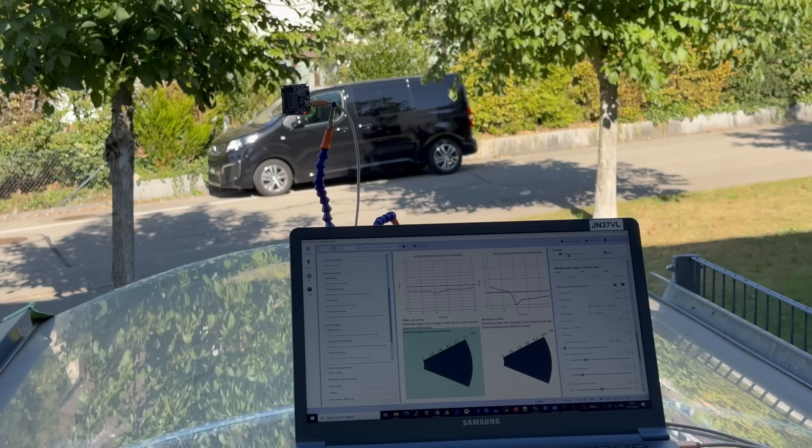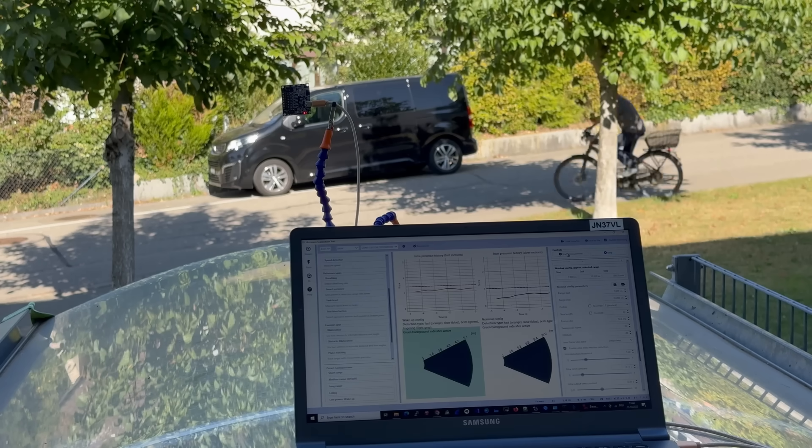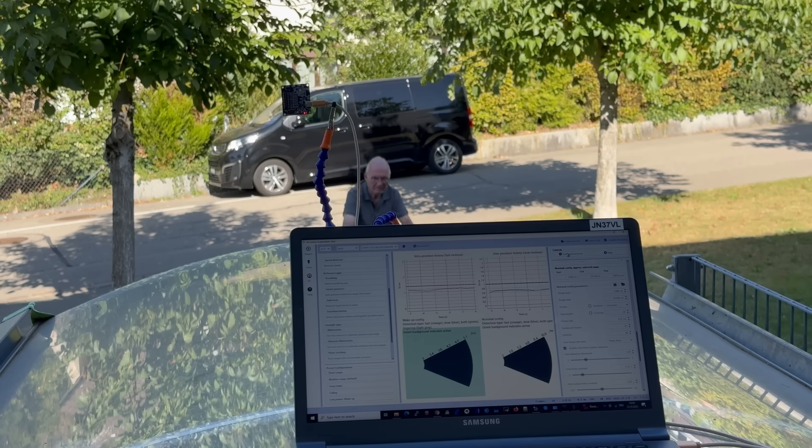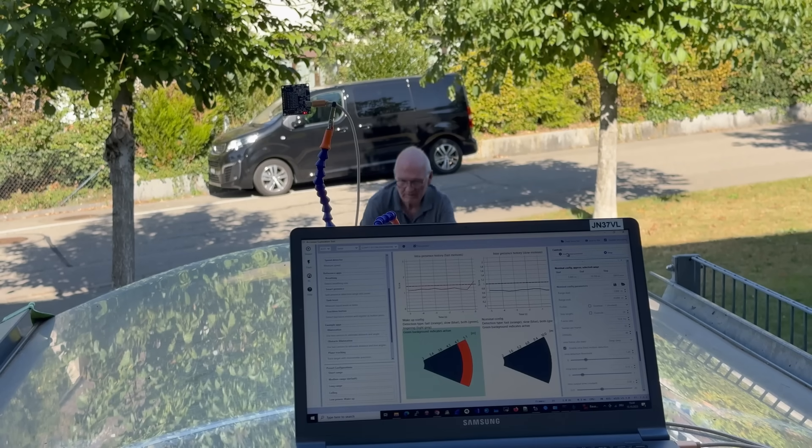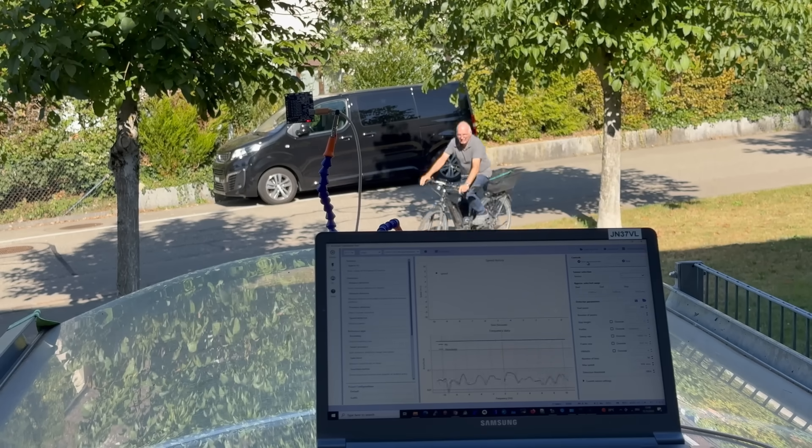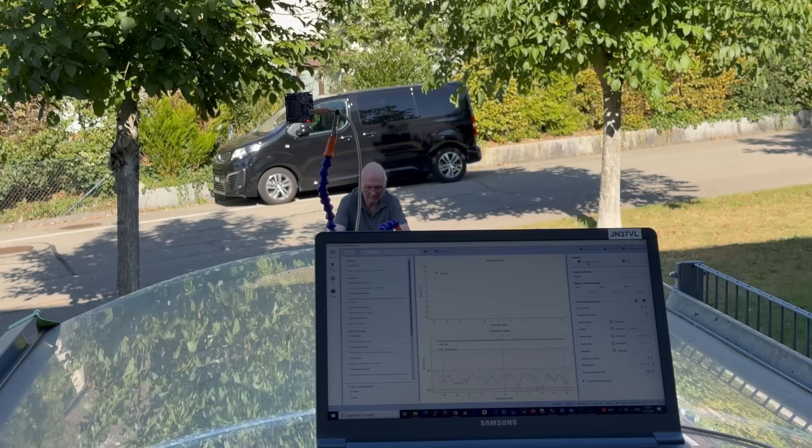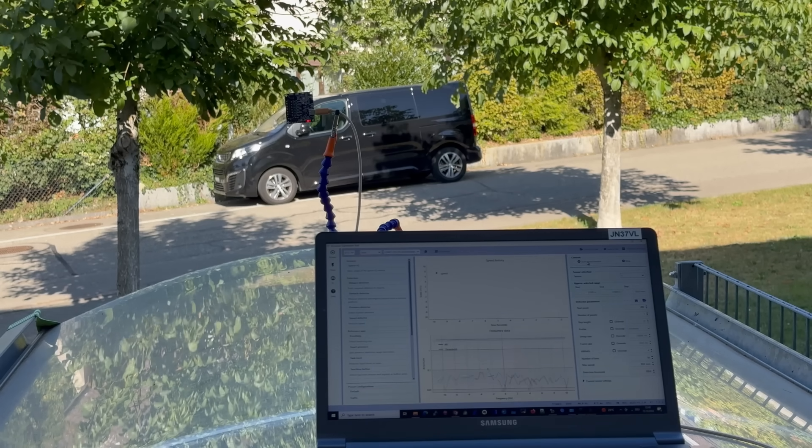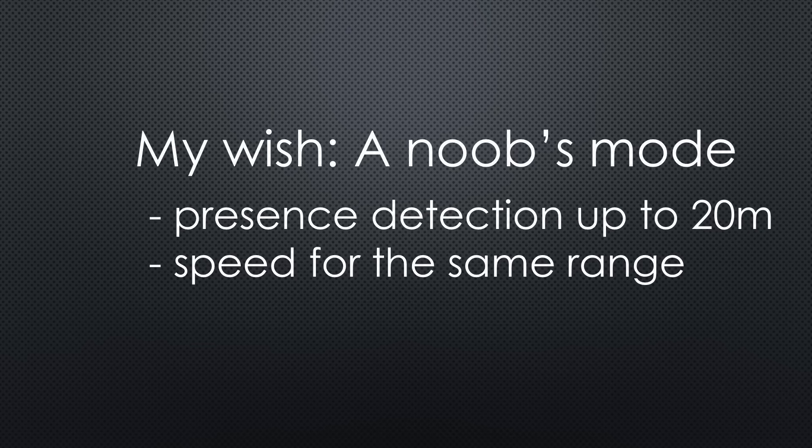Nothing to write home about. I tried walking. I tried it with my metal bike. And I tried to measure speed. Nothing worked. I felt like a real noob. Unfortunately, this is not the first time I have encountered such code. Particularly, technically savvy people want to show how good they are and forget that all the others are not as good. So guys, create a noob's mode that just shows presence for the promised 20 meters range and speed in the same range. Then you can continue with the rest.